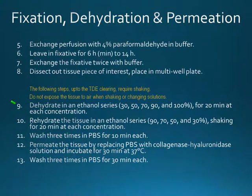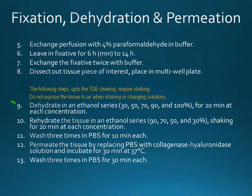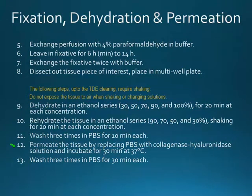For the rest of the steps in this protocol, they all require some orbital shaking. It's critical that the tissue is not exposed to air at all — when changing solutions, always leave enough solution to cover the tissue, then take the excess off and switch to the next concentration. We also permeate the tissue with collagenase and hyaluronidase, because the ganglia and squid tissue have quite complex fibrous tissue around the outside. This helps penetrate that layer to make it easier to get antibodies in and out of the tissue. You need to wash a lot to get the enzymes out and block their activity.